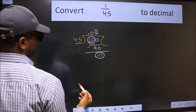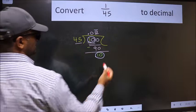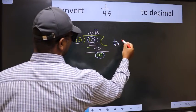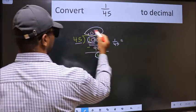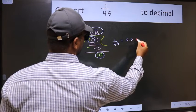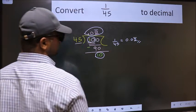Therefore decimal of 1 by 45 is this one: 0.02 bar on this number is our answer.